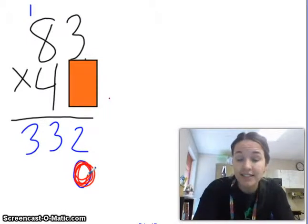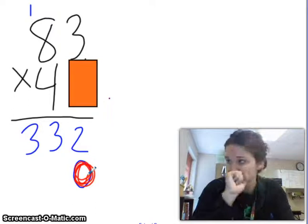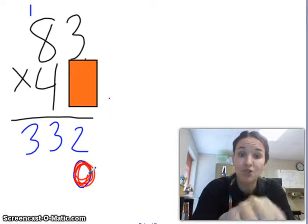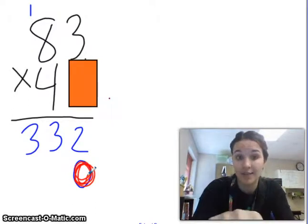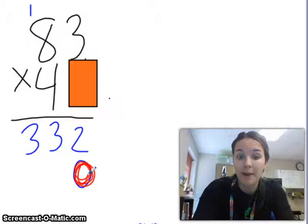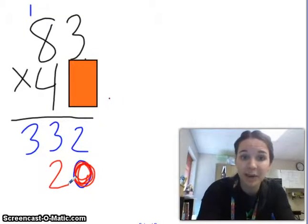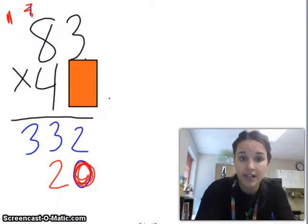So, 4 tens times 3 is going to give me 12 tens or the same as 120. So, I'm going to keep the 2, my 2 tens, and I'm going to regroup 100. Then, I'm going to do 4 tens times 8 tens. That would give me 32 tens. 32 tens plus one more 10 would give me 33 tens.